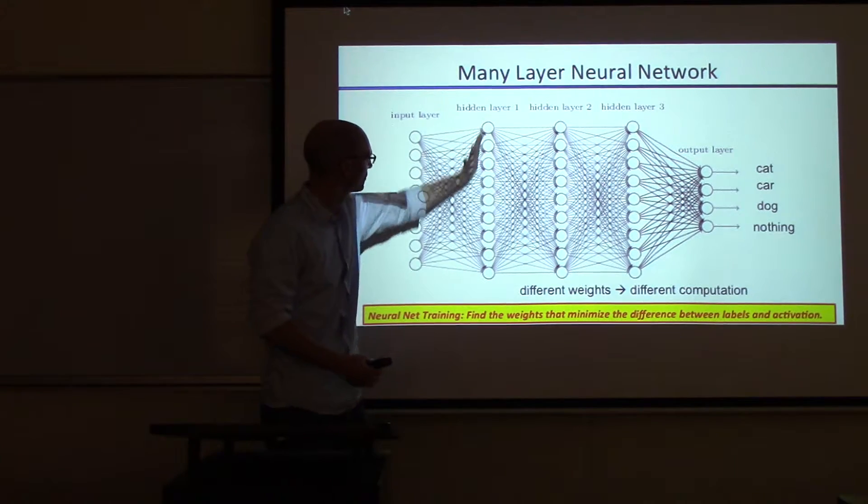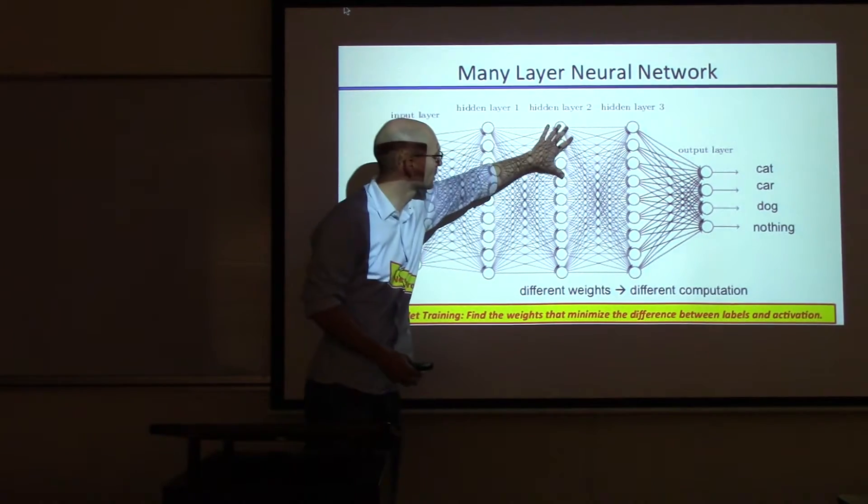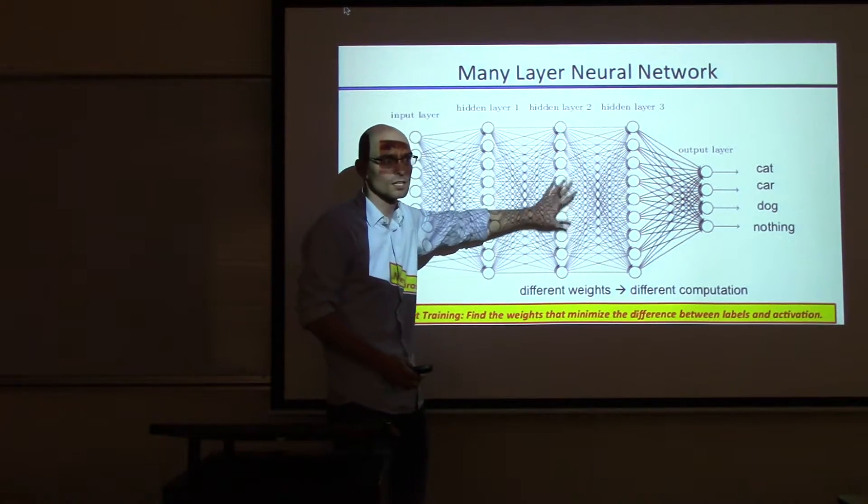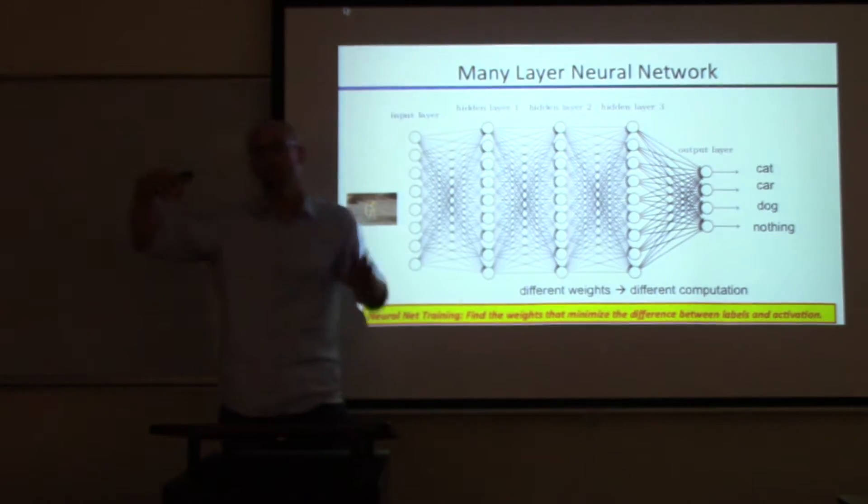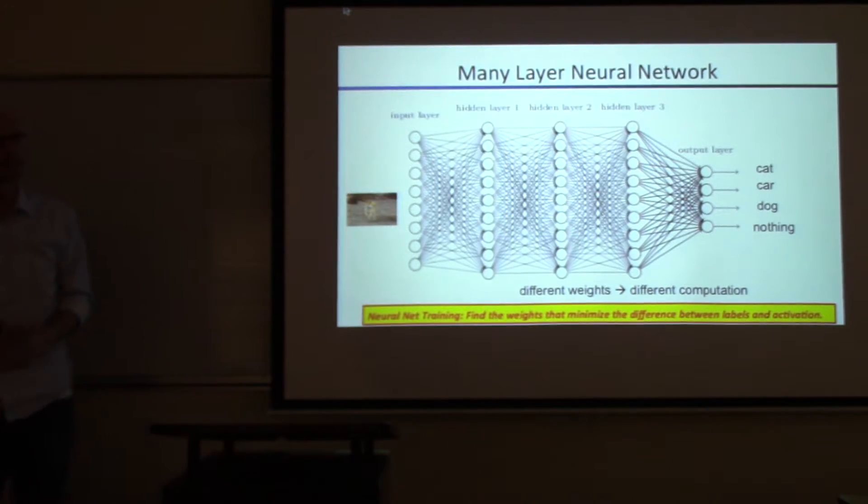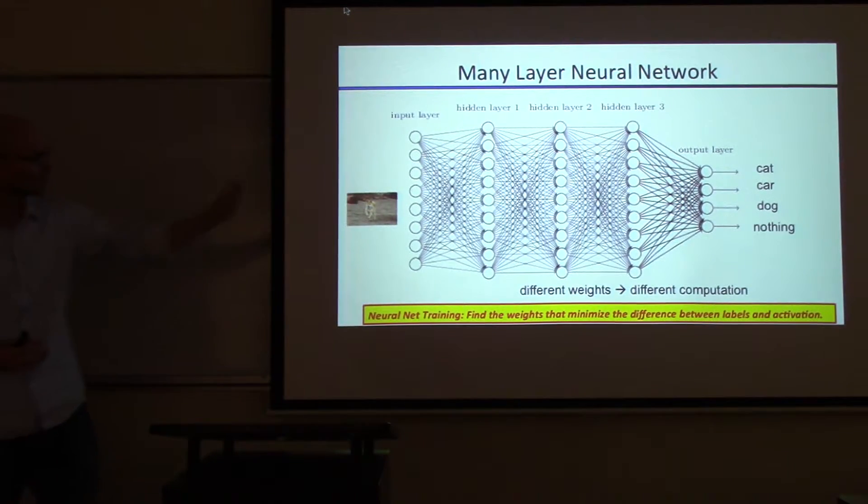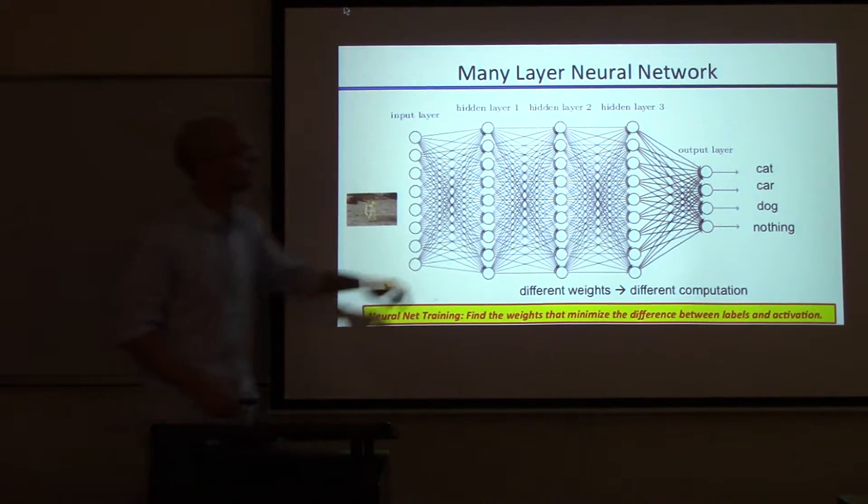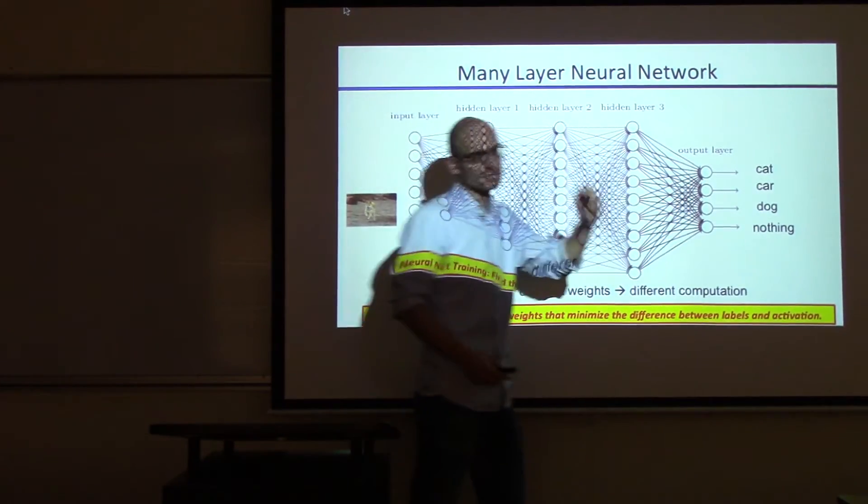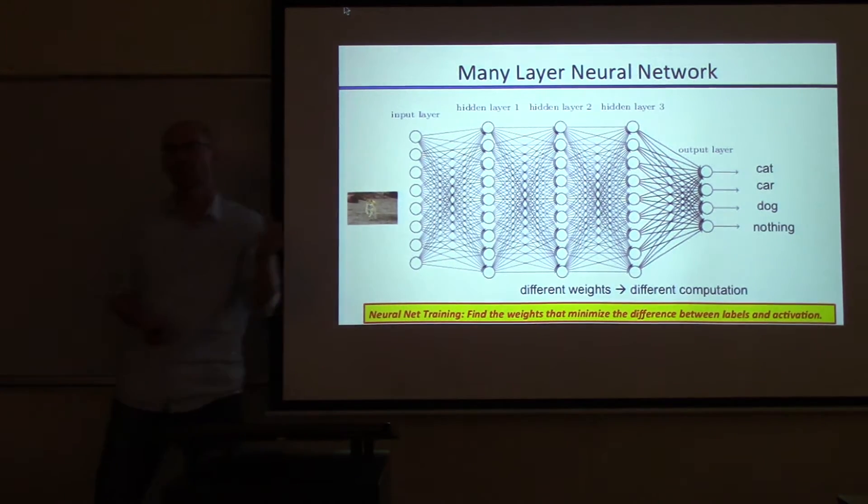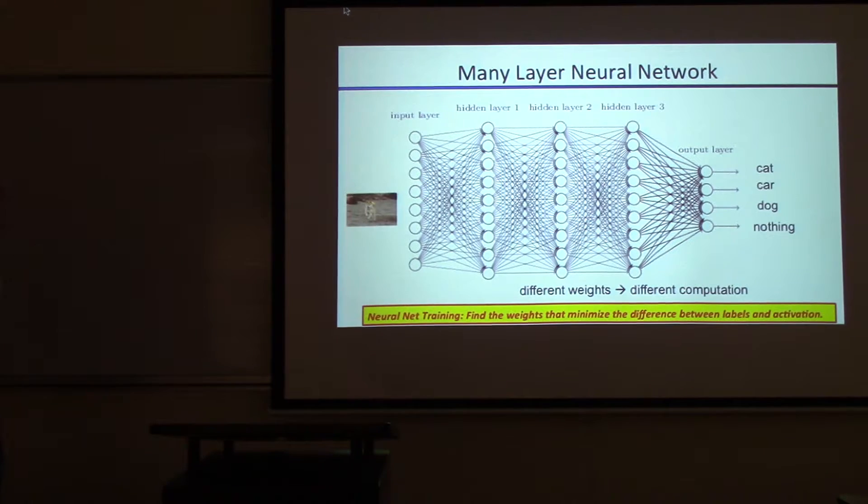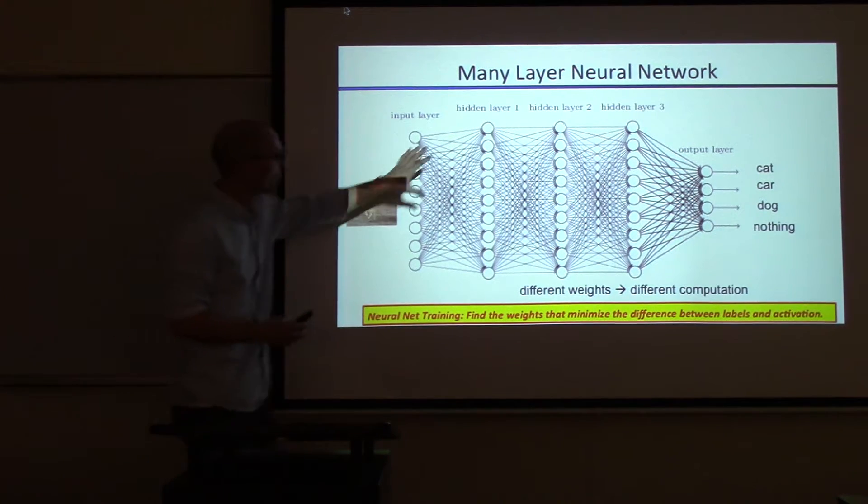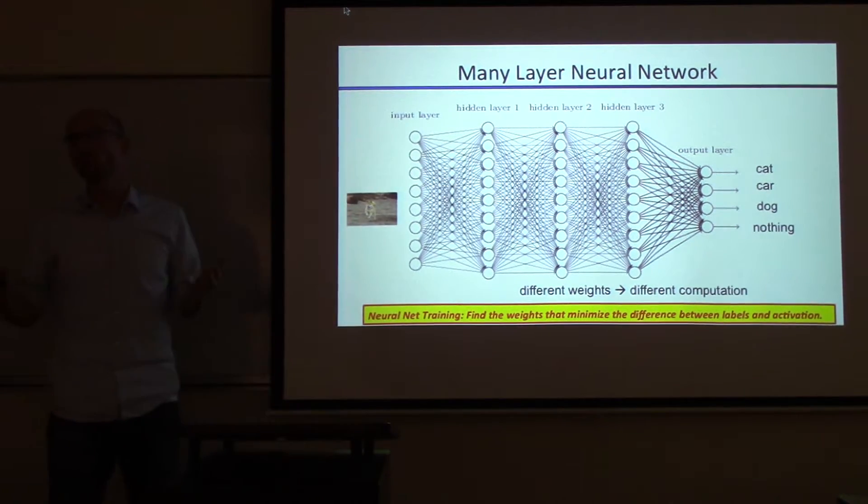This recovers low-level information. This would recover combinations of edges, you get shapes out, and so forth. At the very end, you say, do I get the right combination of edges, circles, and so forth that make for a cat, a dog. The last one will fire. Whichever one fires the highest here is the thing that you say, that's what I saw in the image. That's how it makes decisions.